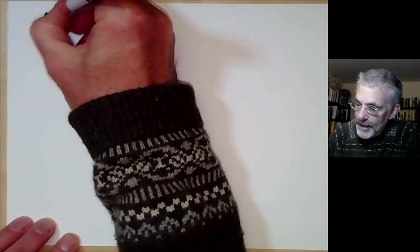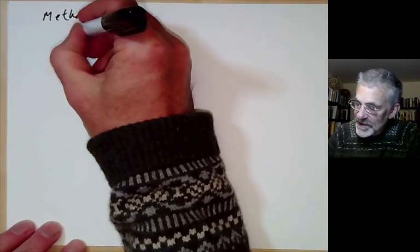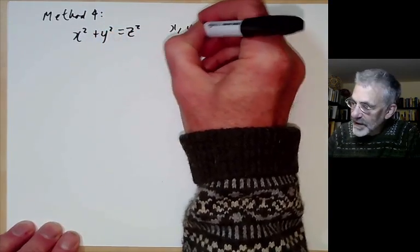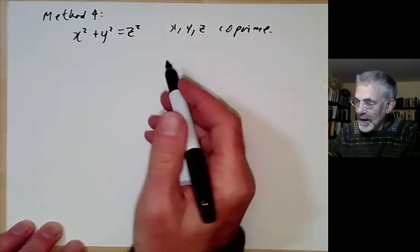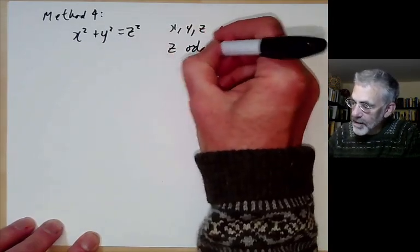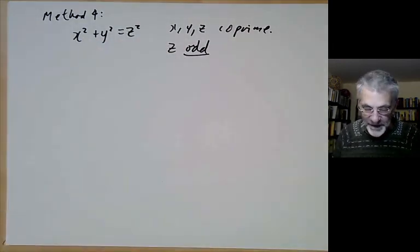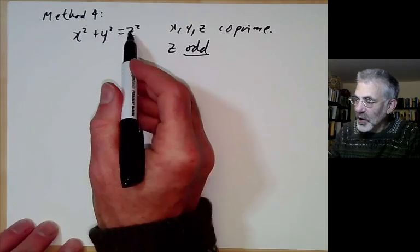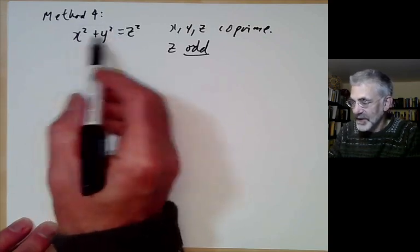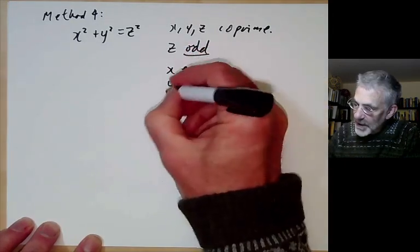Method 4 is a sort of algebraic method. We're trying to solve x squared plus y squared equals z squared with x, y, and z co-prime in pairs. Notice first that we can assume z is odd, because if z were even, then x and y would both have to be even and we could divide everything by two. If z is odd, x and y can't both be odd (the sum would be even) and can't both be even, so we may assume x is even and y is odd.